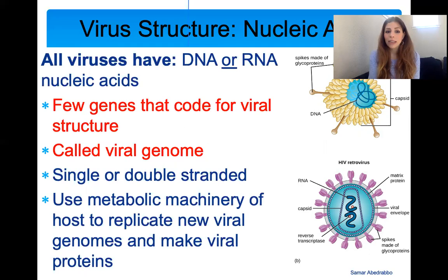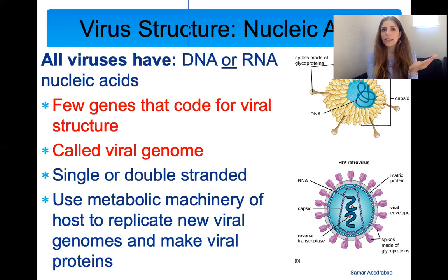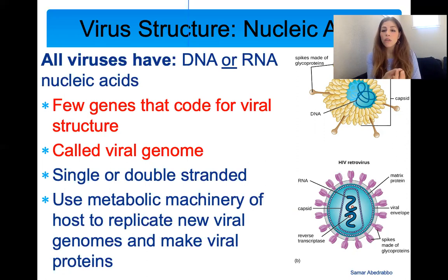The RNA or DNA can be single or double-stranded. Viruses use the host's metabolic machinery to replicate and make new viral genome and viral proteins. The DNA or RNA of the virus is really key — this is what differentiates an influenza virus from an HIV virus, for example. They're both RNA viruses, but HIV causes AIDS, which is very different from influenza causing the flu. The differences are often based on their RNA, as one virus's RNA codes for more pathogenic genes than the other.